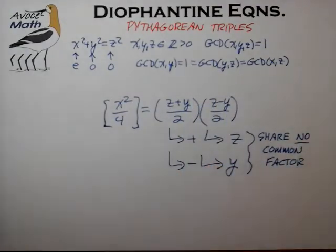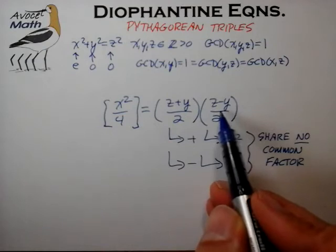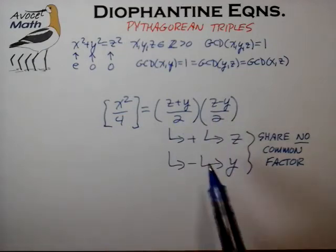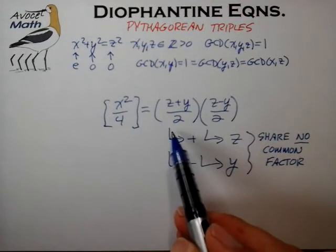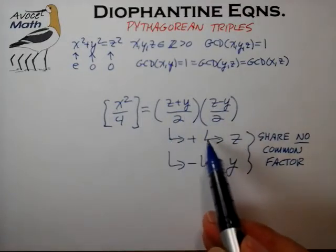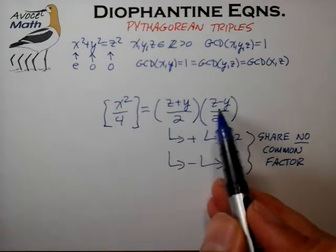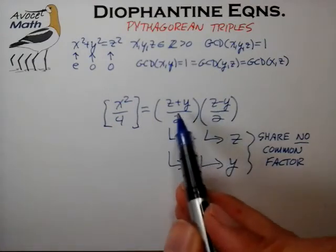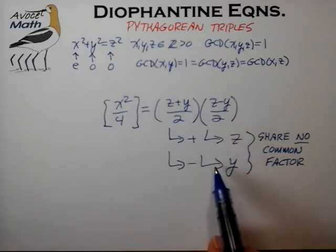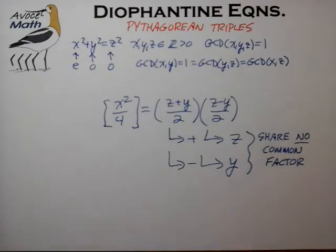We can demonstrate that again with an indirect proof argument. If the two product terms did share a common factor — say 3 — then when we reconstitute z by summing the two factors, that factor of 3 filters down into z. And when we regenerate y by taking the difference, the factor of 3 also filters into y. So then y and z would share a factor of 3, and we know that y and z share no common factor.